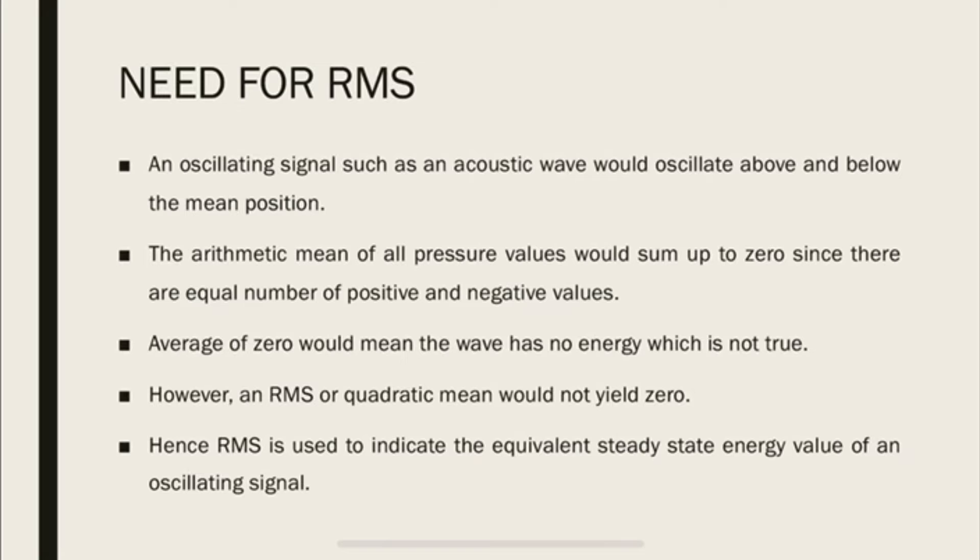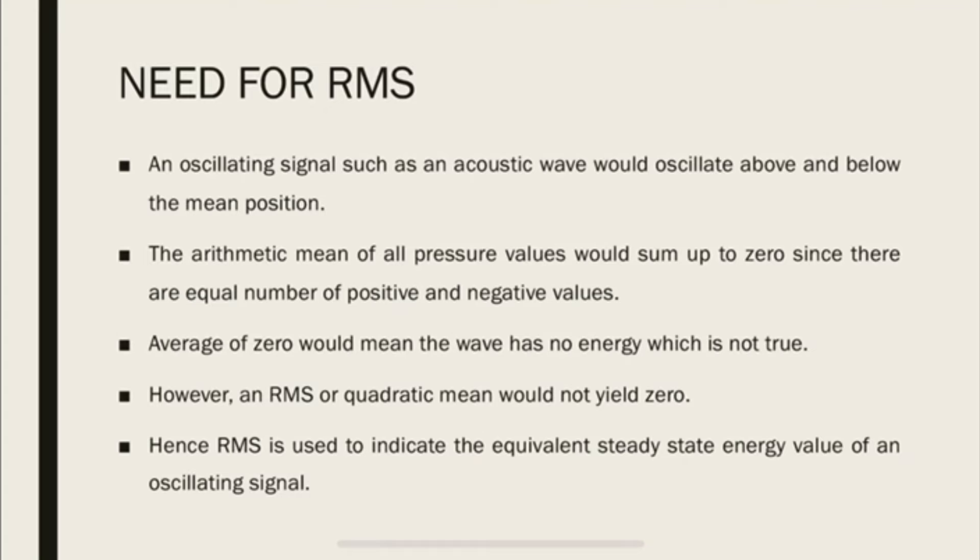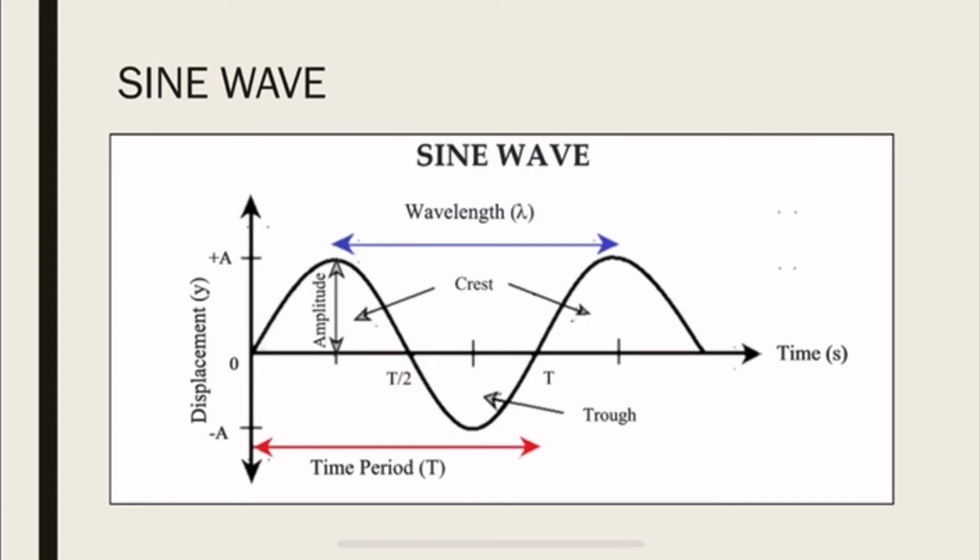So why do we need RMS? An oscillating signal such as an acoustic wave or a sound wave would oscillate above and below the mean position as we saw in the previous slide. So if you take the arithmetic mean of all the pressure values, you literally sum up to zero because there are equal number of positive and negative values. So for example, in the crest, you have positive values, whereas in the trough, we have negative values and they are both equal. So you simply take an arithmetic mean, you're going to get zero.